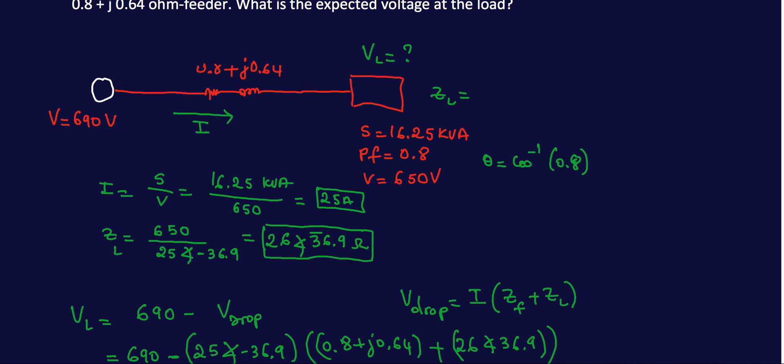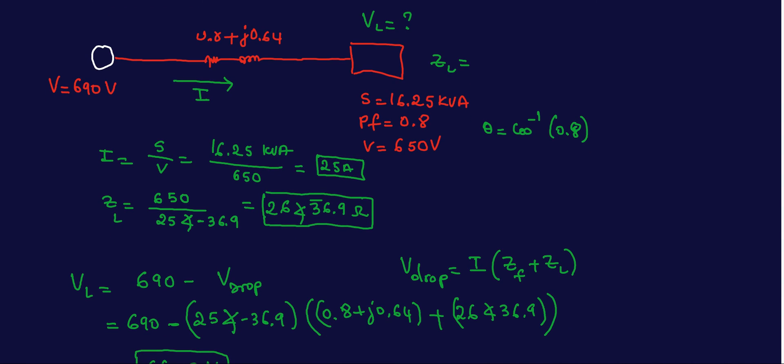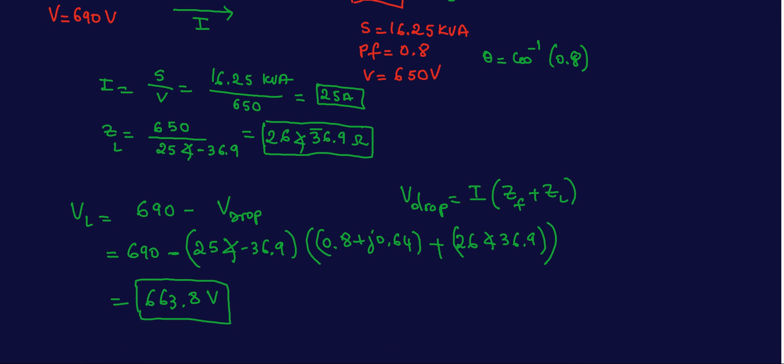So what we did was we got the current flowing using—because this is sort of like a series as well, so the current flowing here is the same thing as here. We used this information at the load to get the current with the power factor—don't forget about that. So once we got the I, we solved for the impedance of the load. We got the impedance of the load, we added that with the feeder to get the total impedances. We got the total impedance, we multiplied by the current to get the voltage drop, and we subtracted the voltage at the source. That's how we did it. I feel like I went the long way here, I'm not sure if I explained it properly, but I hope you guys understand. I think I should have named this like V1 and I could have probably done this better.